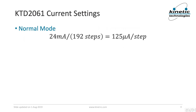The KTD2061's multiplexed LED current regulators are settable up to 24 milliamps average in normal mode operation. There are 192 setting steps from 0 to 24 milliamps, which means the step size is 125 microamps.